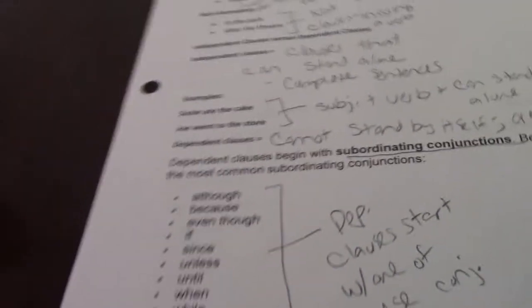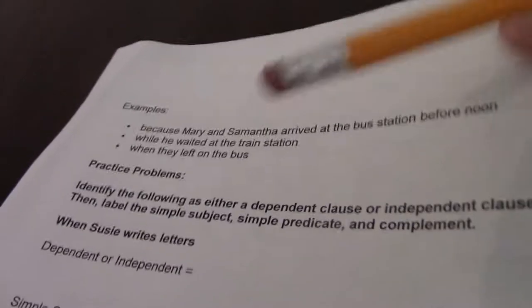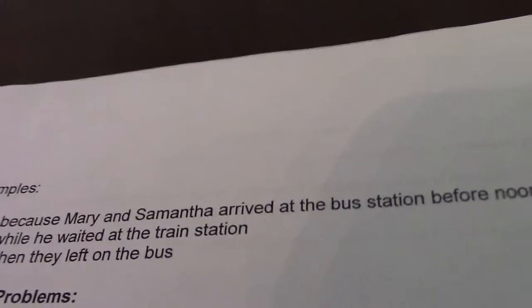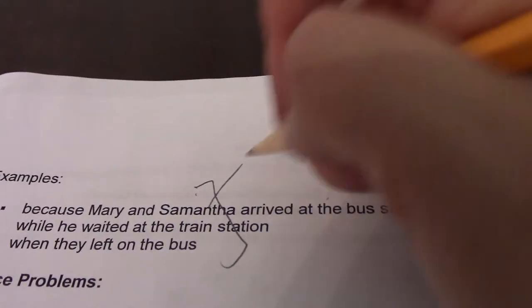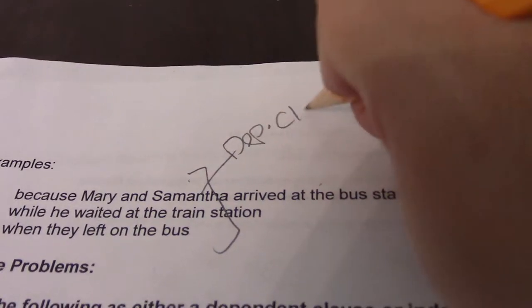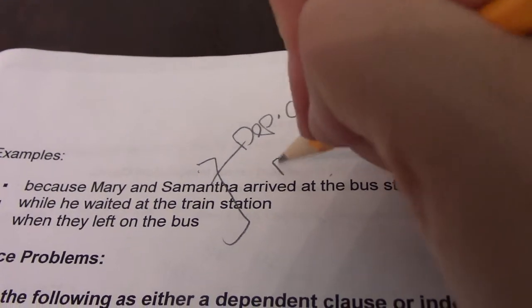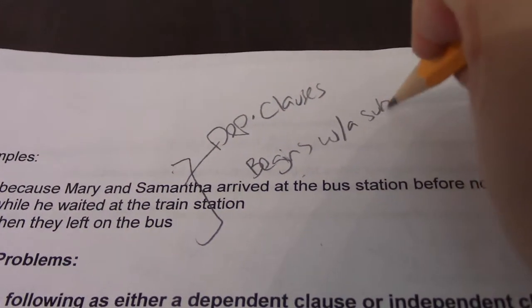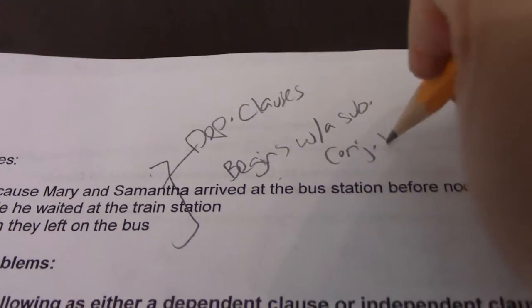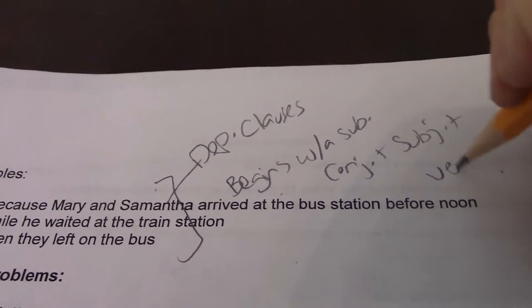Let's try a few examples of dependent clauses: 'Because Mary and Samantha arrived at the bus station before noon,' 'while he waited at the train station,' 'when they left on the bus.' Notice these all begin with a subordinating conjunction, and each has a subject and a verb.